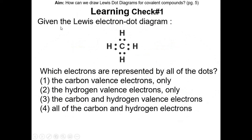Learning check number one: Given the Lewis electron dot diagram, which electrons are represented by all the dots? Pause the video and resume once you have the answer. You should know that electron dots are represented by the valence electrons. And since this is covalent compounds, these valence electrons are being shared — they're the carbon and hydrogen valence electrons. So the answer is choice three.